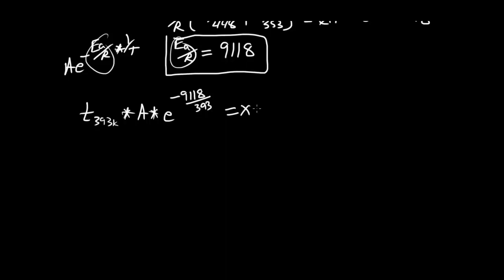Minus 9118 over 393, that's going to equal X, which is equal to, I'm going to use the 180 minute part times A, e to the minus Ea over R times 1 over T. Minus 9118 over 353. I'm going to assume you can do the math. And when I do the math, T for 393 is about equal to 13 minutes.